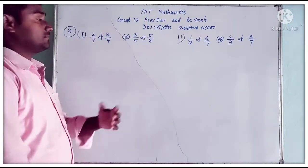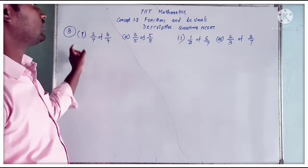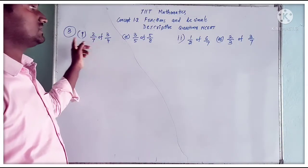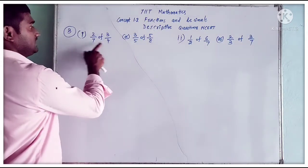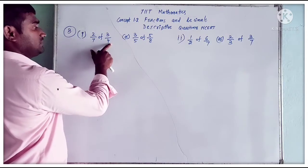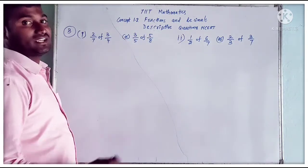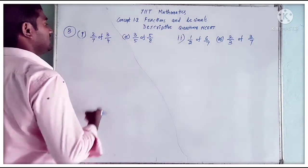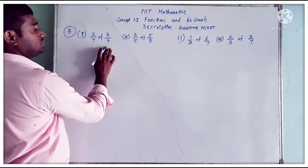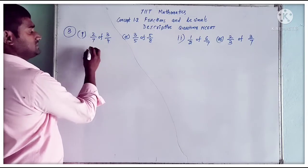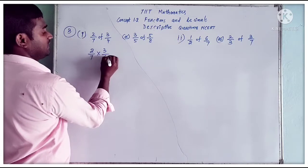Now I am going to discuss the third question: which of the following is greater? In the first part, they ask: is 2 by 7 of 3 by 4 greater, or 3 by 5 of 5 by 8 greater? First we find the value of 2 by 7 of 3 by 4. 'Of' means multiplication, so 2 by 7 into 3 by 4. Check for cancellation.